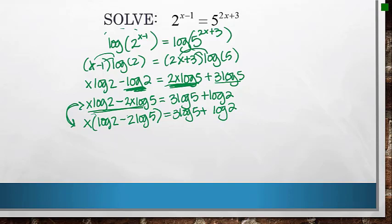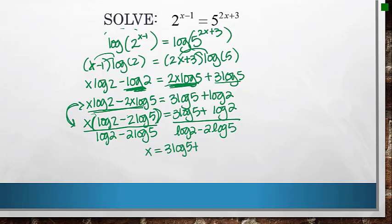By doing that, that's allowing me to get this x isolated. I have x times this nastiness. So to get rid of a multiplication, you divide. So this is exactly 3 log 5 plus log 2 over log 2 minus 2 log 5. So there's the exact answer. That is really ugly. And then if you were to approximate it, it's about negative 2.19.